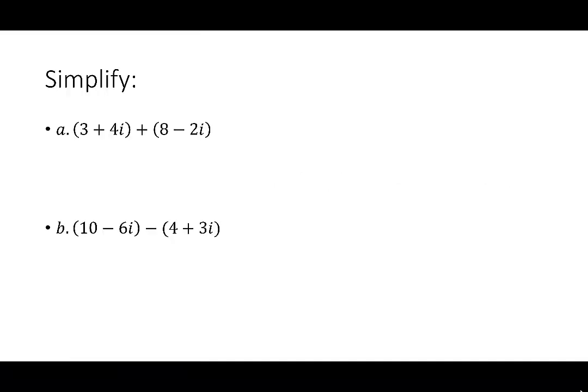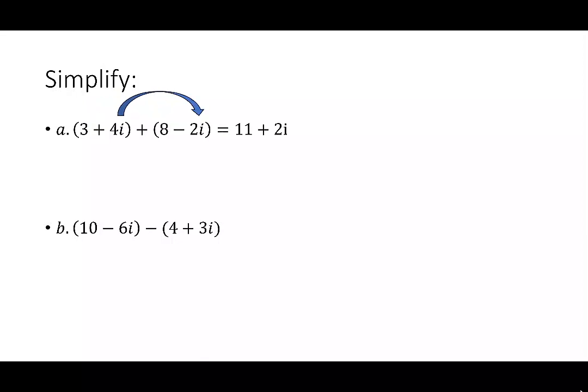It looks like this. If I have 3 plus 4i plus 8 minus 2i, I'll add the real parts of 3 and 8 to get 11. Then I'll combine the imaginary parts of 4 and negative 2i, which will give us a positive 2i.